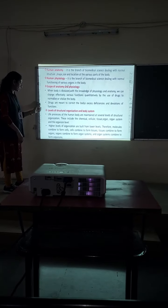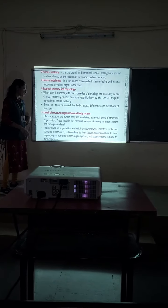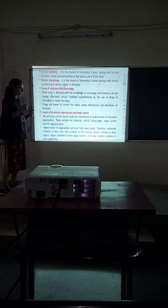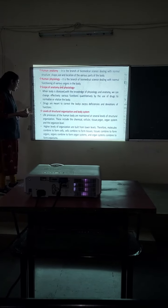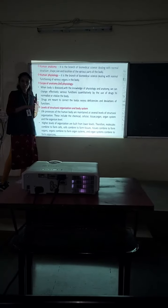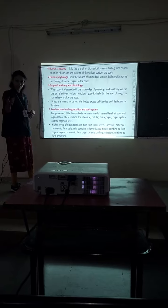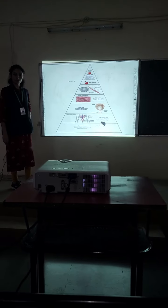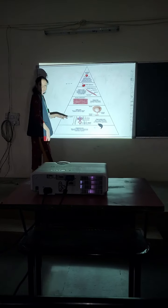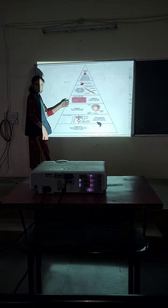The next point is the level of structural organization. Life processes of the human body are maintained at several levels of structural organization, including the chemical, cellular, tissue, organ, and organ system levels. Here we represent the different levels of structural organization.